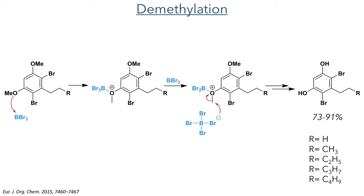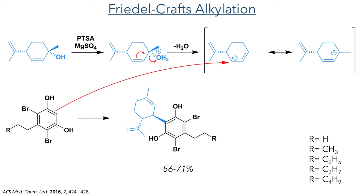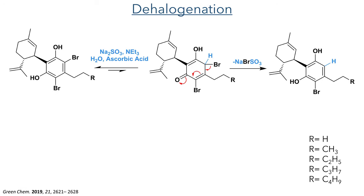This is the simplified version of the mechanism, but a reference to a paper covering it in more detail has been included. To install the cyclohexanone moiety, the authors used a Friedel-Crafts type alkylation. This reaction used PTSA as an acid catalyst, which protonates the hydroxyl group allowing it to be eliminated as water. Magnesium sulphate acts as a desiccant and absorbs this water, shifting the equilibrium to favour formation of the cationic intermediate. This intermediate acts as an electrophile towards the aromatic ring, which attacks from the face anchored to the isoprene group due to steric hindrance, to form the target products with yields of 56–71%.